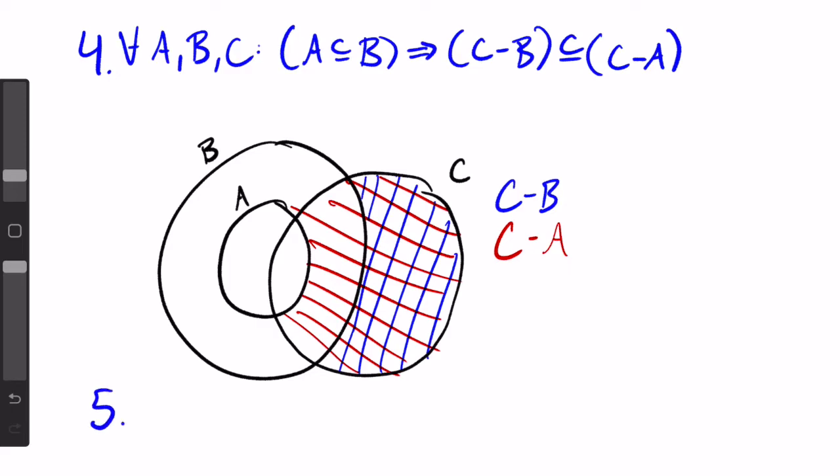And the last subset property is for all non-empty A and B: if A is a subset of B, then the intersection of A is a subset of the intersection of B. I'm not going to go through this one now, but a proof of it is in the example problems which are linked in the description.